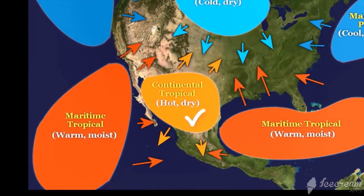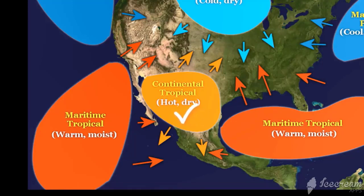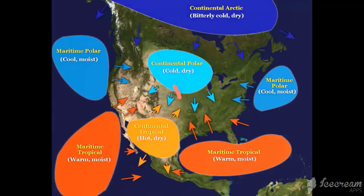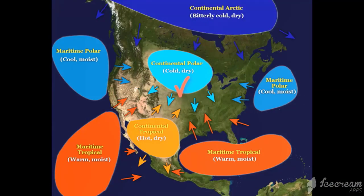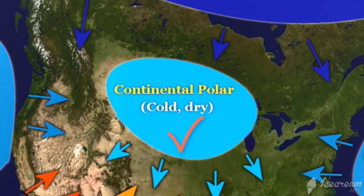To the south, hot, dry air affects many states in the United States southwest. Finally, continental polar air masses form over northern Canada, resulting in very cold winter temperatures in parts of the northern United States.